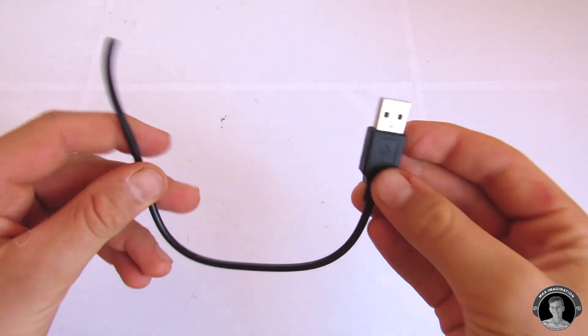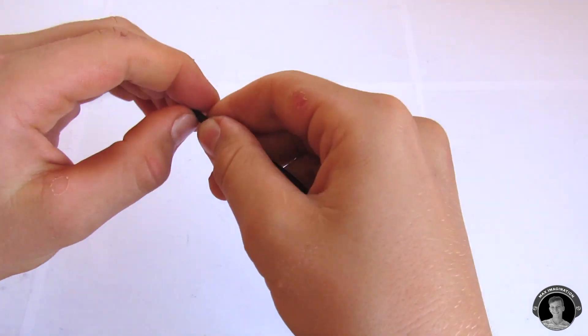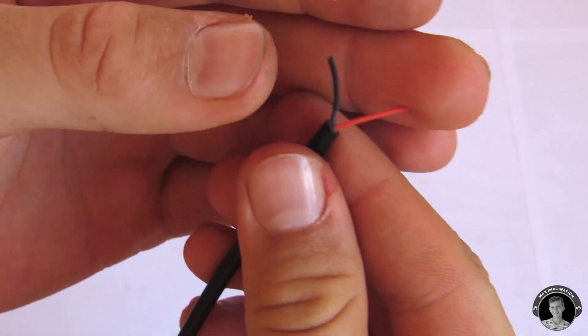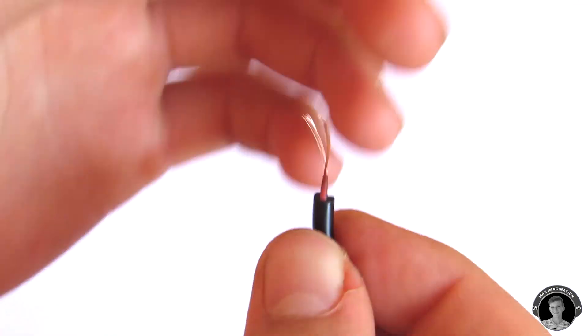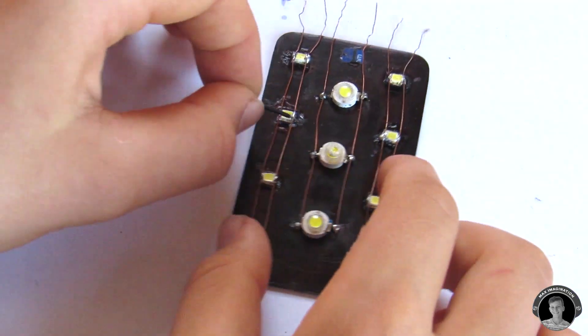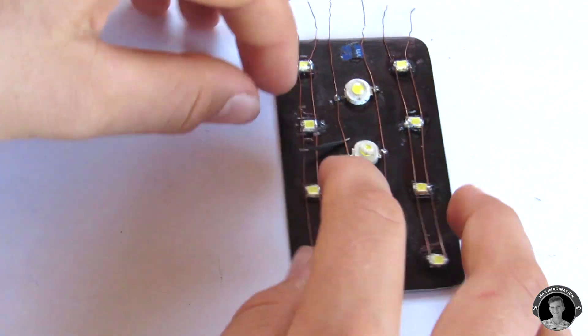Taking the USB portion of the cable, you're going to strip its end. Taking some short pieces of wire, you're going to connect all the like terminals together.